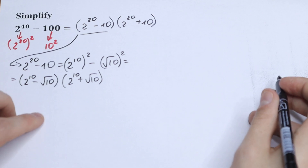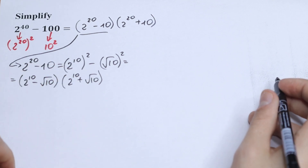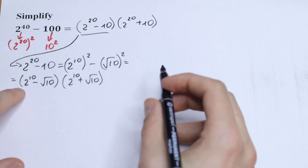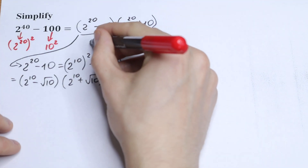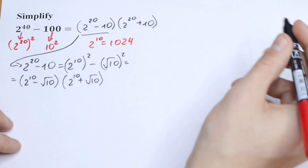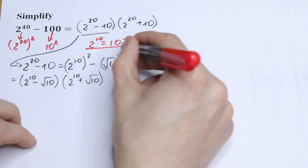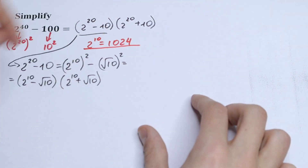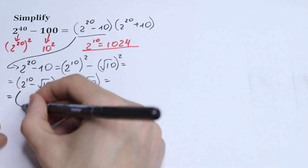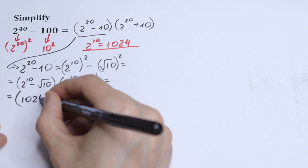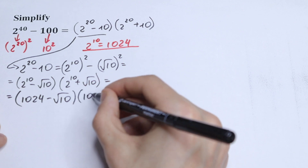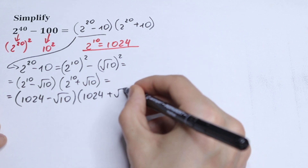What do we do next? Let's multiply all of these parentheses. We know that 2 to the 10th power equals 1024 — not a huge number, and it's really good to know. So we substitute: 2 to the 10th power equals 1024.